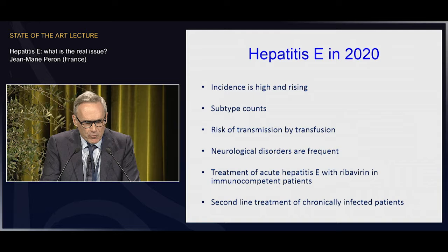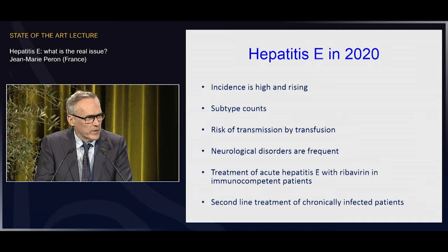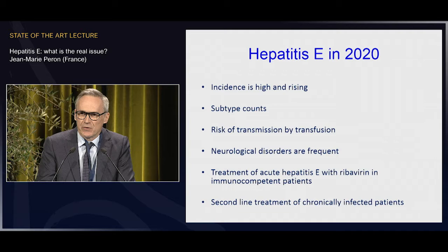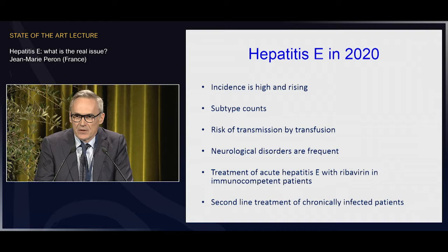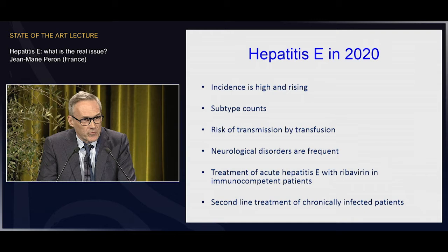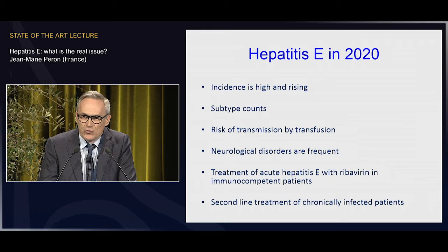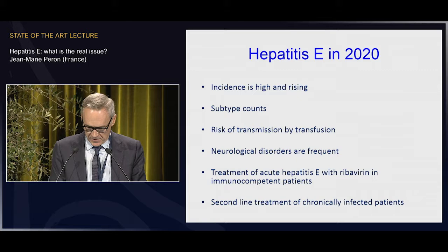First, the incidence of hepatitis E is high and rising. Second, we have new data showing that the subtype of the virus is probably important, with different severity according to subtype. There's a risk of transmission by transfusion — a new risk of HEV transmission in Europe. Neurological disorders are very frequent and can sometimes be severe. Treatment of acute hepatitis E with ribavirin is under debate, and for chronic hepatitis E, the problem is second-line treatment when ribavirin doesn't work.